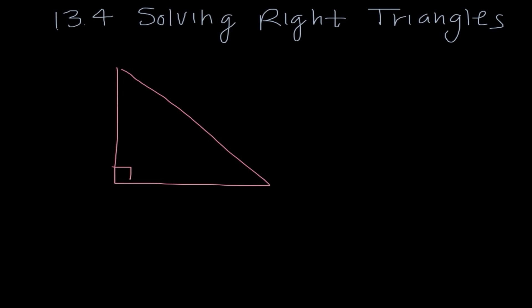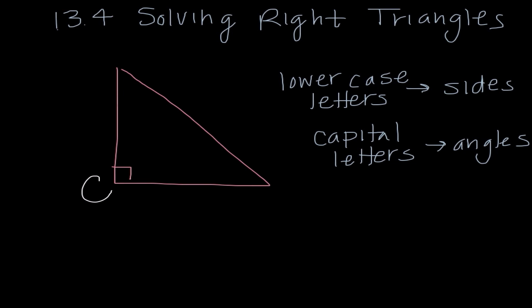The first thing I want to talk about when we deal with triangles and labeling everything: we always use lowercase letters to represent sides and capital letters to represent angles. I'm going to start with calling angle C our right angle, so that would be side C. The other two don't really matter, but it is important that we always put whichever side is opposite the angle, we label them the same exact letter.